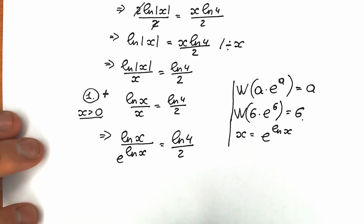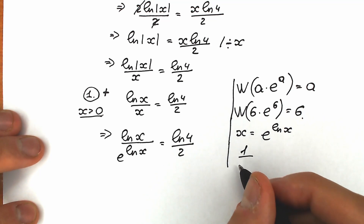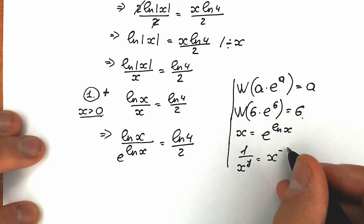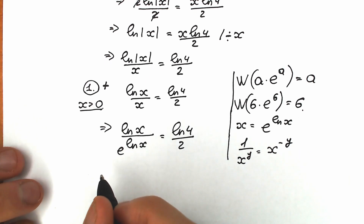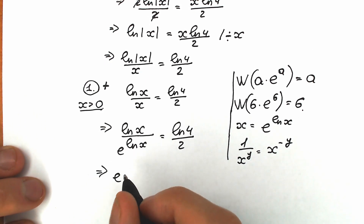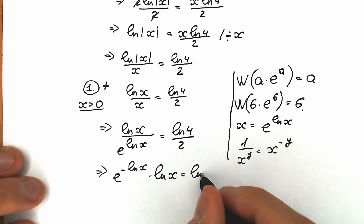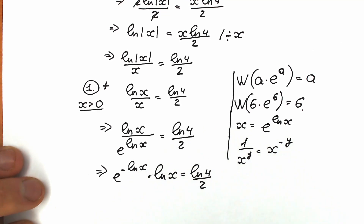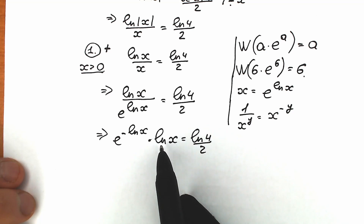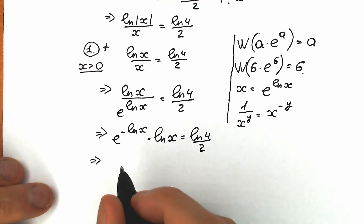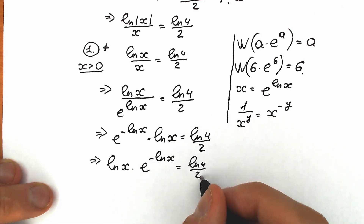Right now, let's bring e to the power natural log x from the denominator to the numerator. If we have 1 divided by x to the power y, that's x to the power minus y. So we need to put minus. As a result, we have e to the power minus natural log x, times natural log x. Let's change position — we prefer e on the second position for the Lambert W function definition. So we have natural log x times e to the power minus natural log x, equal to natural log 4 over 2.